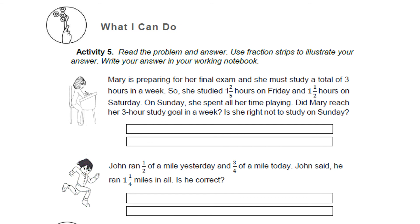For the 'What I Can Do' item, read the problem and answer using fraction strips. Mary is preparing for her final exam and must study a total of 3 hours a week. She studied 1 and 2/5 hours on Friday and 1 and 1/2 hours on Saturday. On Sunday she spent all her time playing. Did Mary reach her 3-hour study goal? Is it right not to study on Sunday? Also: John ran 1/2 mile yesterday and 3/4 mile today. John said he ran 1 and 1/4 miles in all — is he correct?